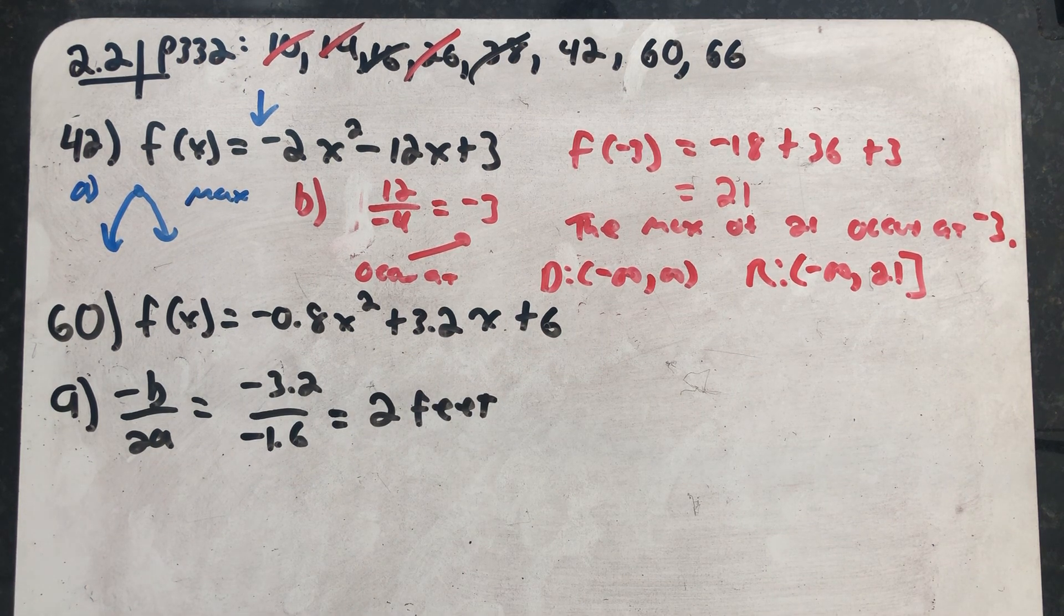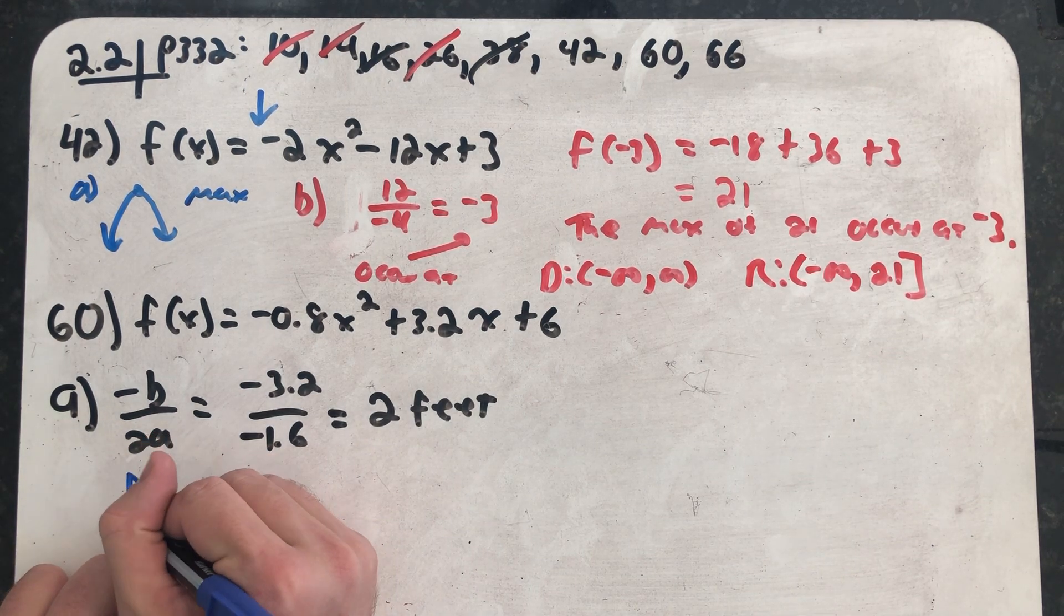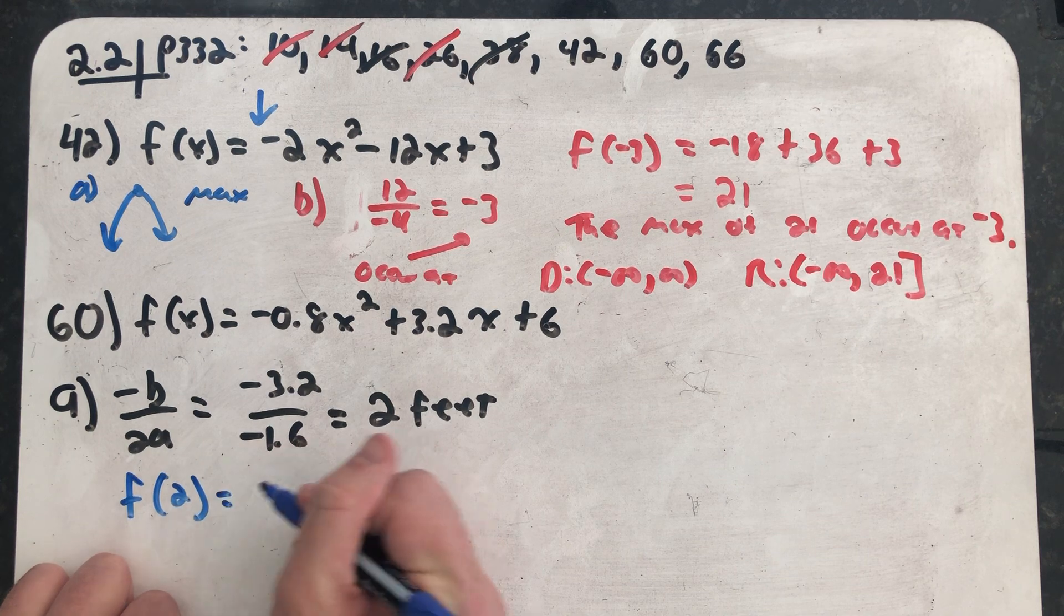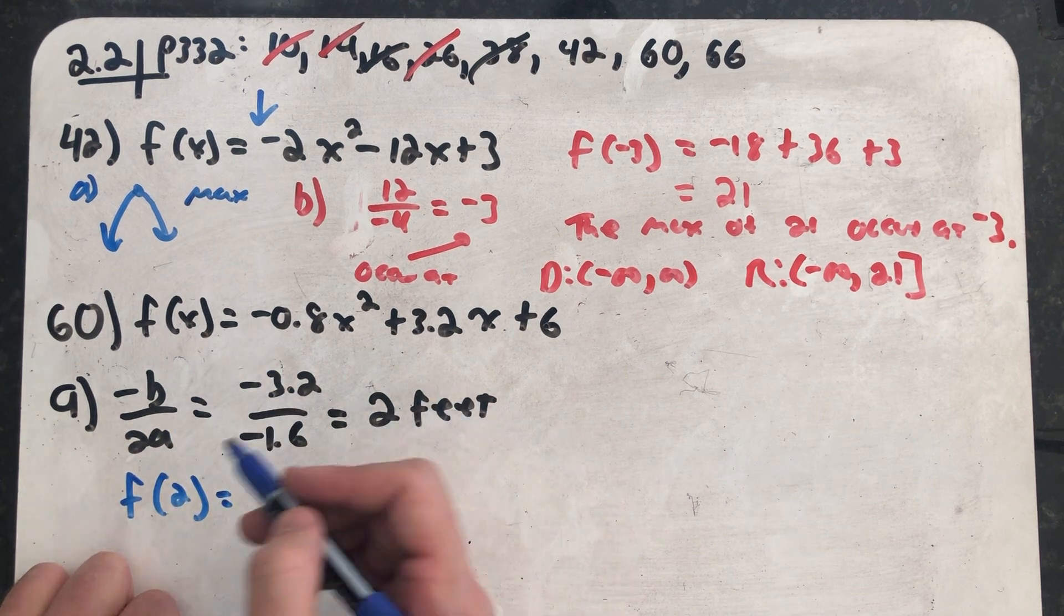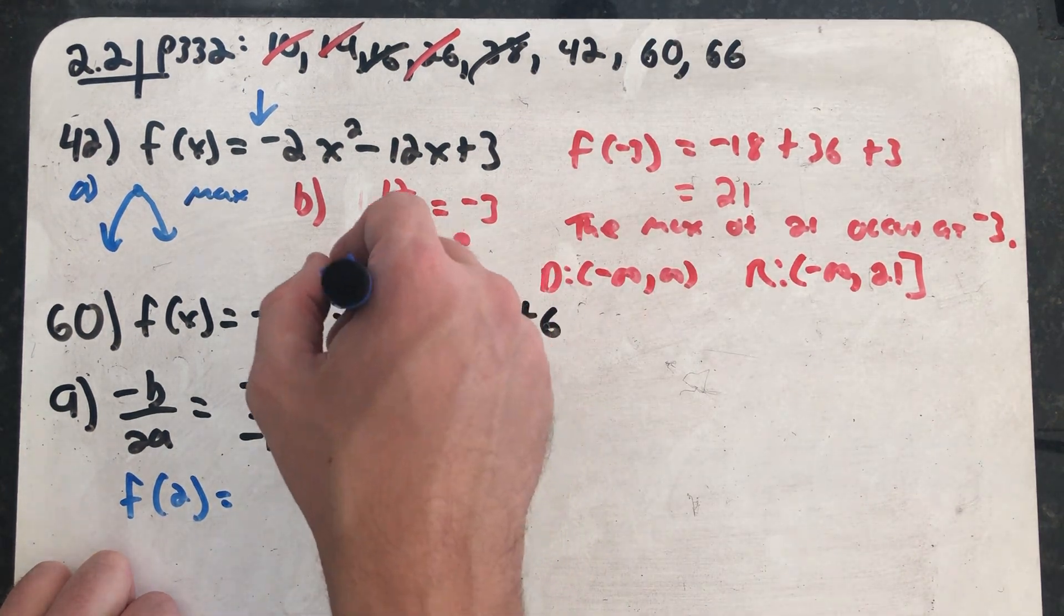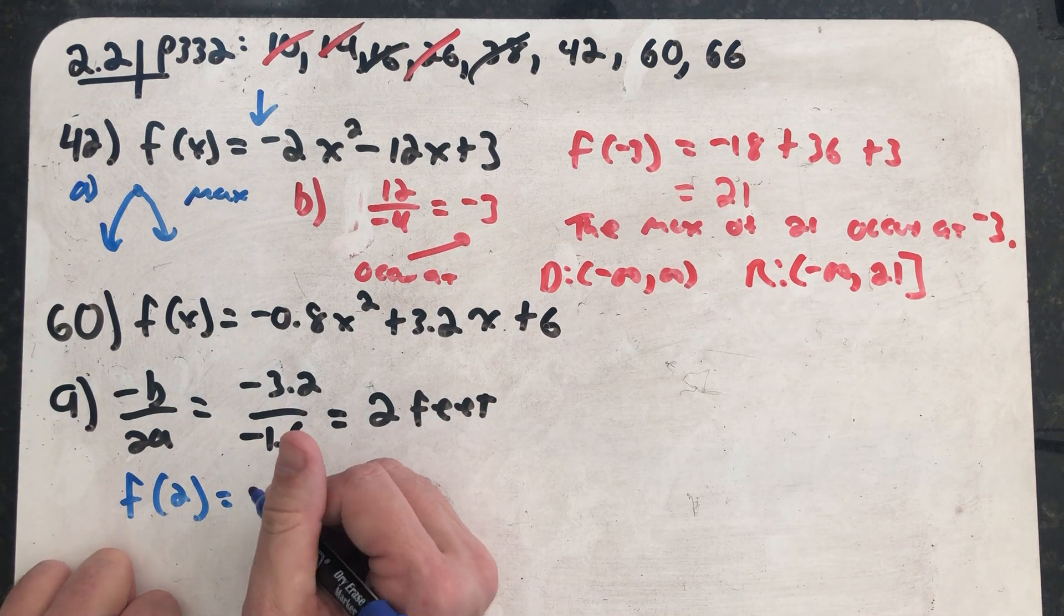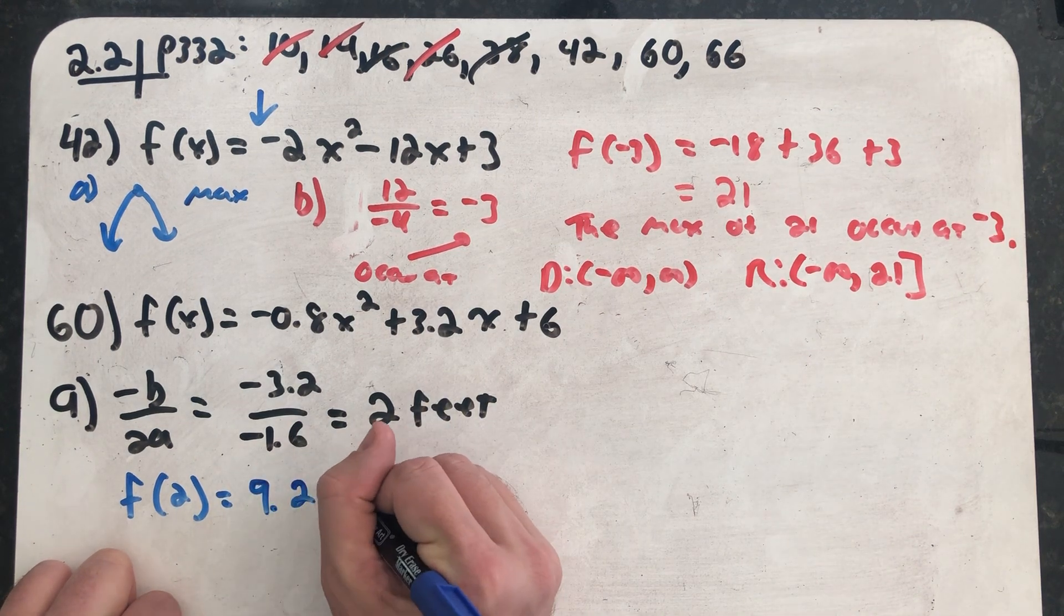To find the actual maximum height, I have to plug back into the function. So I plug 2 into the function. I need to calculate f of 2. I'll have 2 squared is 4 times minus 0.8 plus 3.2 times 2 plus 6. And we find out that's 9.2 feet.